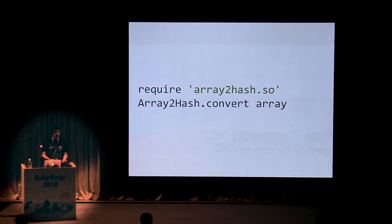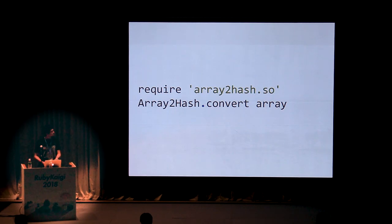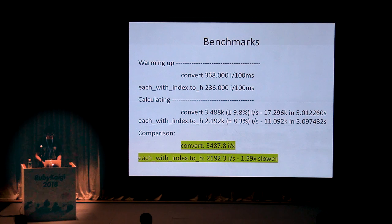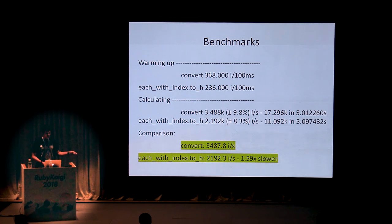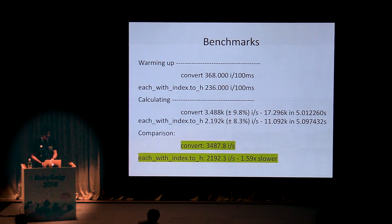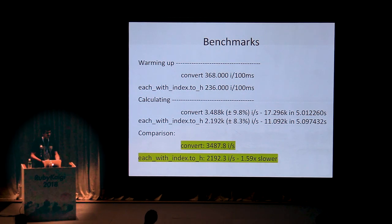You can just compile this using the Rubex compiler, require the shared object file it generates, and call it through a Ruby script just like you would call any other Ruby method. The benchmarks show some really good results — writing this in Rubex is about 1.6 times faster than the normal Ruby method, and you can do this at a much lesser cost to you as a developer.